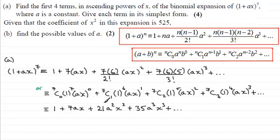Now, in part B, we're told that the coefficient of x² in this expansion is 525, and we've got to find the possible values of a for two marks. So, again, if you'd like to have a go at this and haven't done so already, I'll just give you a moment to pause the video. OK then, welcome back if you had a go.